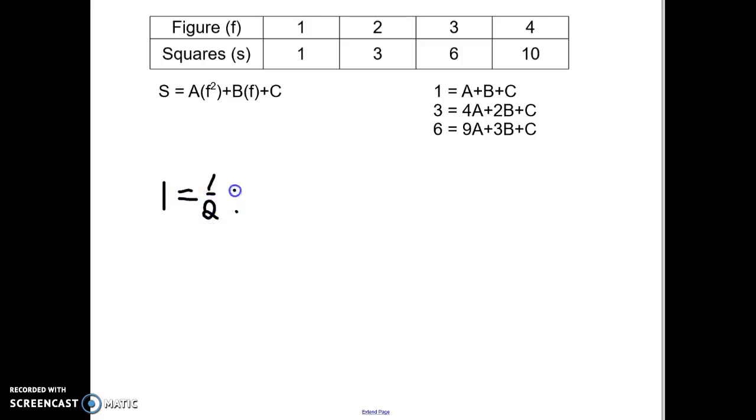I'm going to use the very first one because it's the easiest. So 1 equals 1 half plus 1 half plus c. I get 1 equals 1 plus c, which means c has to equal 0.